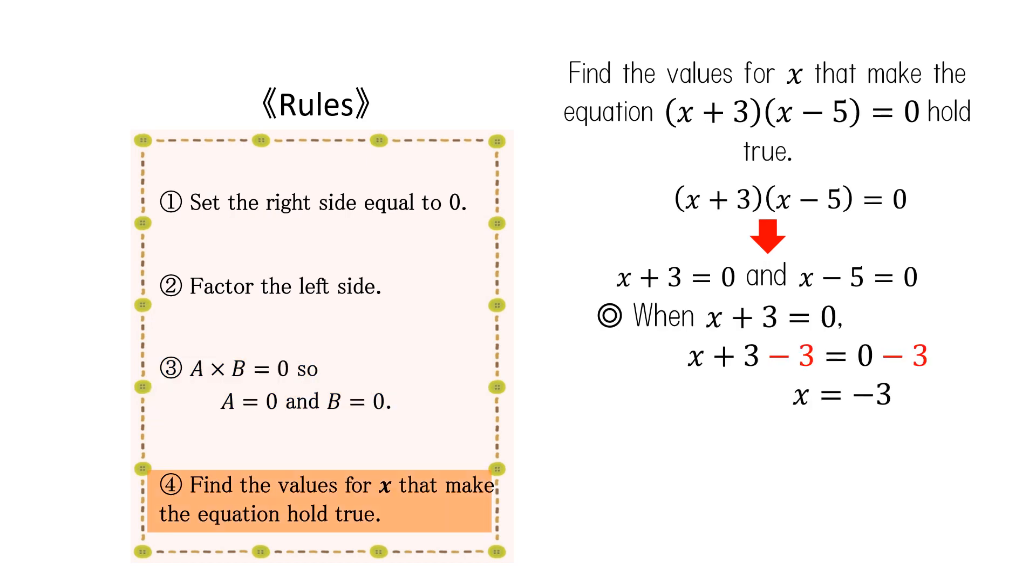In other words, x plus 3 equals 0 or x minus 5 equals 0, giving us the solutions x equals negative 3 and x equals 5.